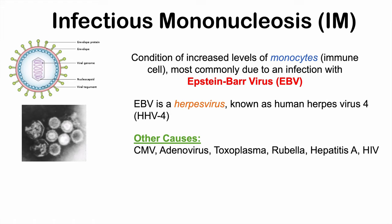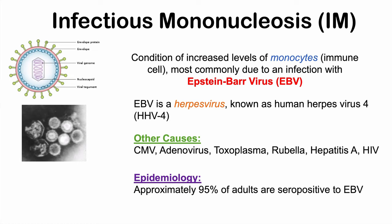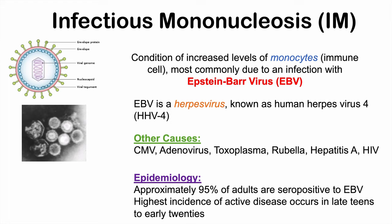Regarding the epidemiology of mononucleosis: approximately 95% of adults are seropositive to EBV, meaning they've been exposed to Epstein-Barr virus at some point in their lives and have developed antibodies to it. Although the vast majority of adults have been exposed, the highest incidence of active disease occurs in late teens and early twenties.